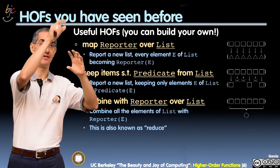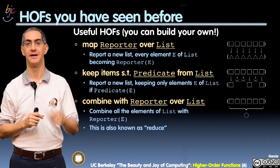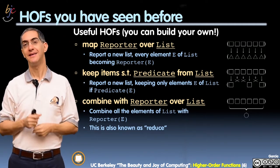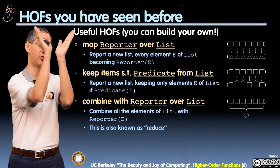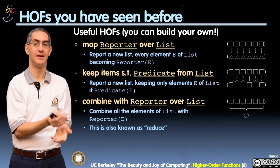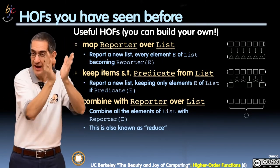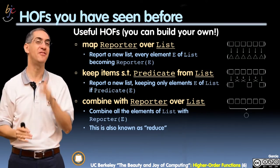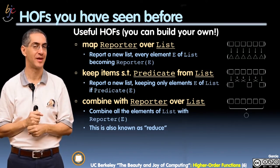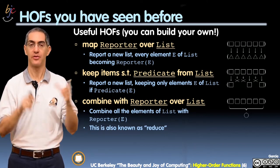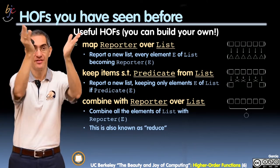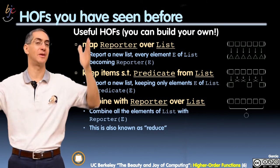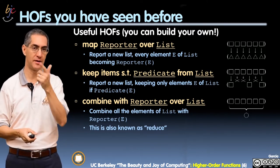COMBINE takes a dyadic function — a function of two arguments — and it's kind of a smushing operation. The idea is you use it to combine elements together so that eventually you get one thing as output. COMBINE is a way to take a big list and make it into one element. We've never really told you how COMBINE works, so that's what today is about.